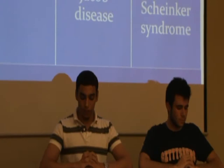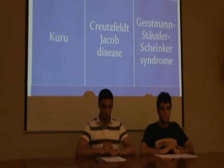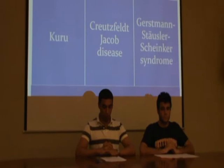Gerstmann-Sträussler-Scheinker disease presents a slight difference from the other two major spongiform diseases. The main one is the spongiform transformation of the cerebellum. It is passed on through genetic inheritance, and it doesn't cause ataxia or death, just a decrease in the intellectual capabilities of the patient. Nowadays, there is a debate about whether these three or other diseases supposedly caused by prions, such as fatal familial insomnia, are actually completely independent diseases or manifestations of the same condition.